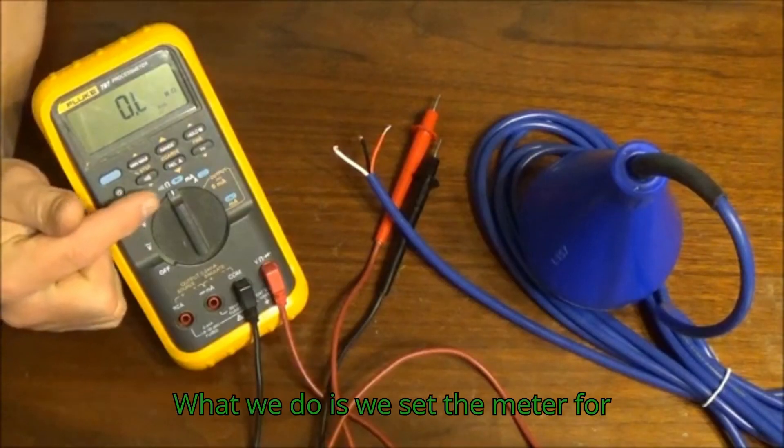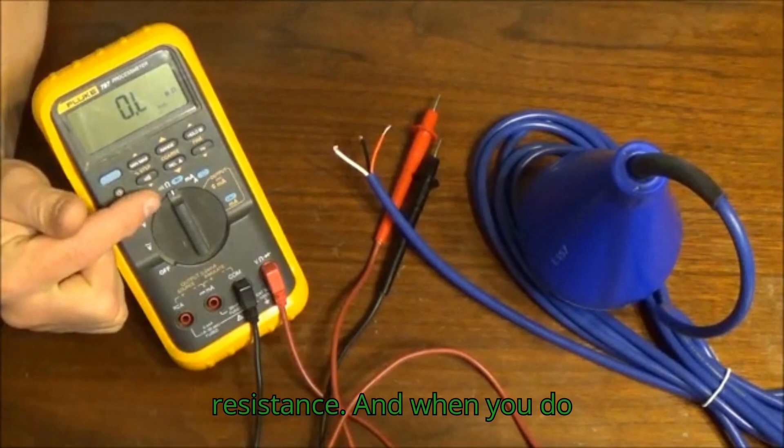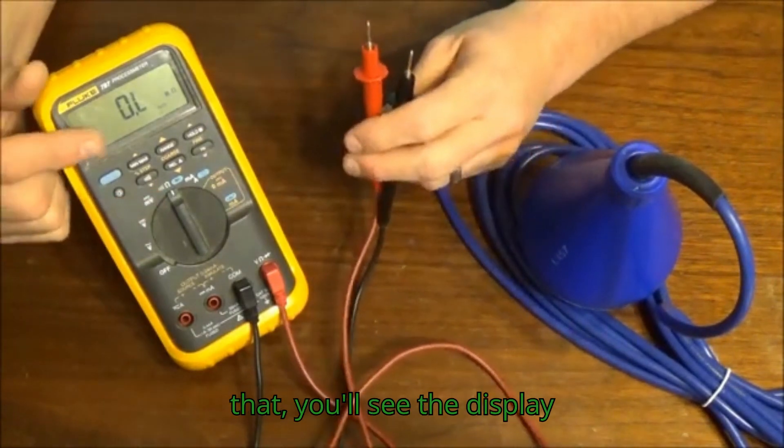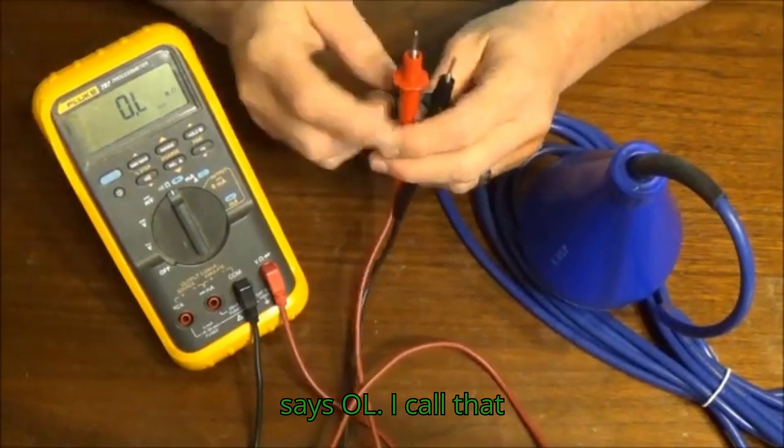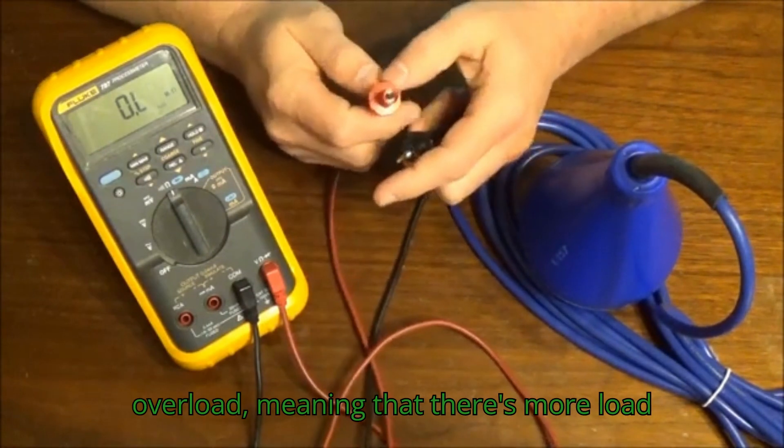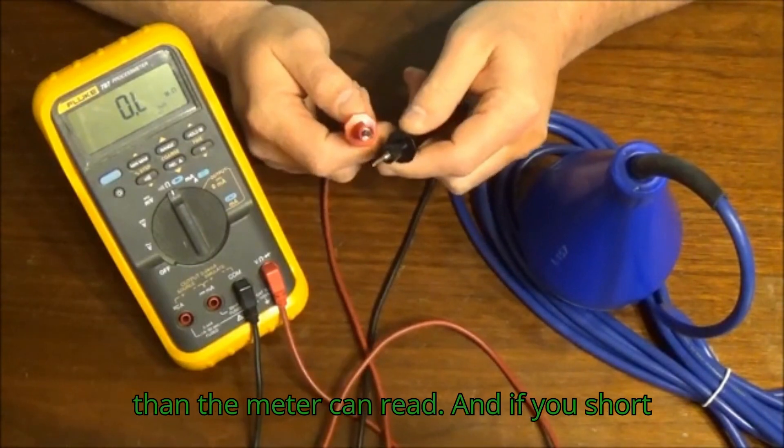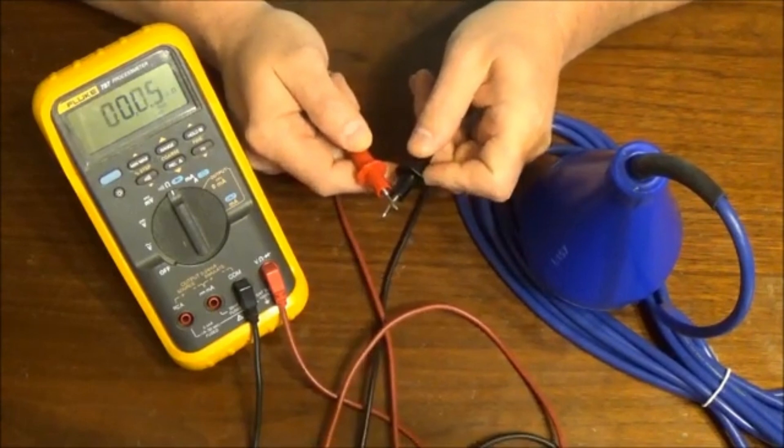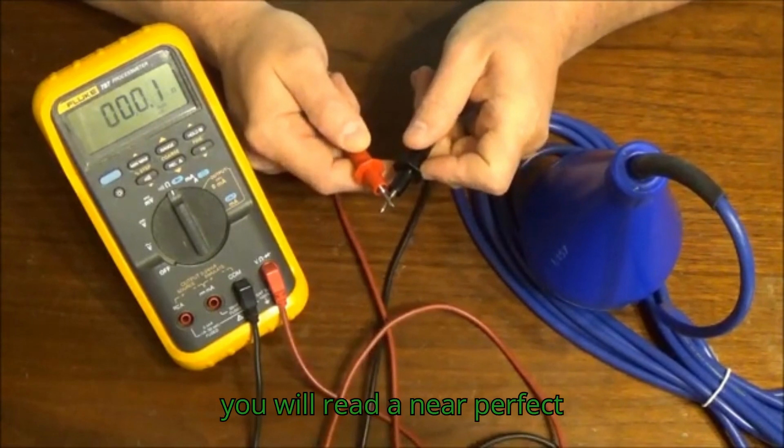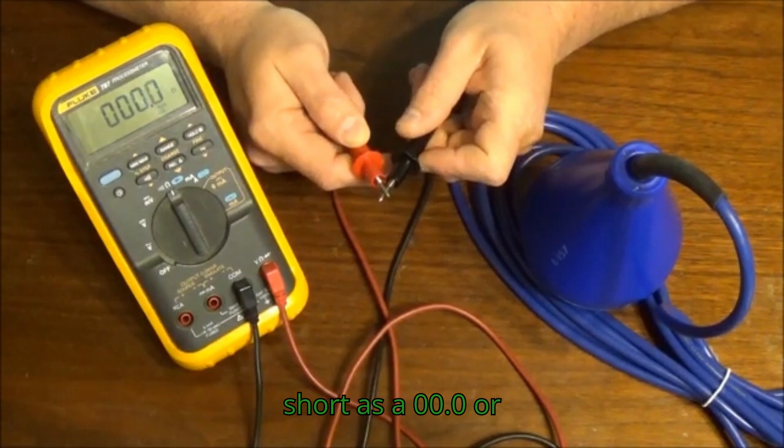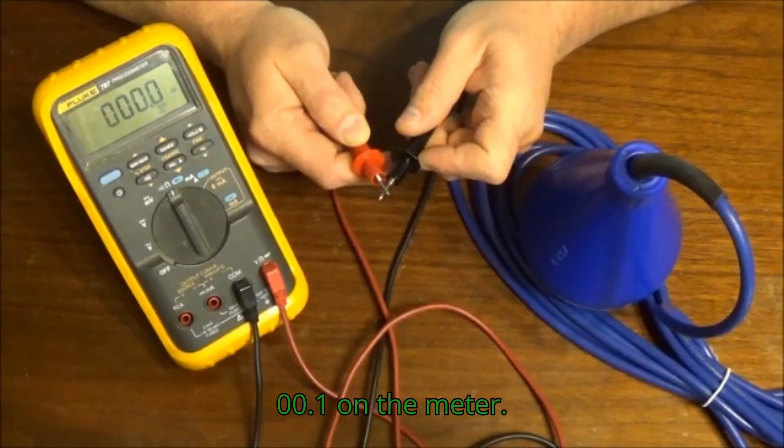What we do is set the meter for resistance. When you do that, you'll see the display says OL. I call that overload, meaning there's more load than the meter can read. If you short the leads together, you'll read a near perfect short as 0.0 or 0.1 on the meter.